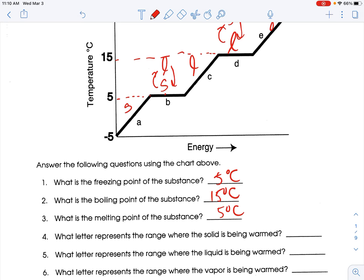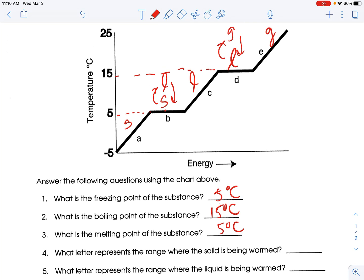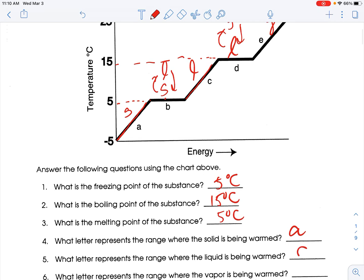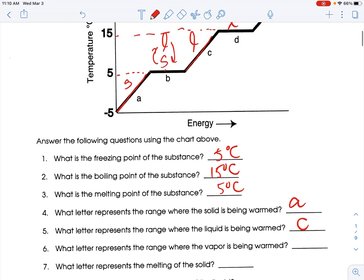What letter represents the range in which a solid is being warmed? Here is our solid. It's getting higher temperature, so it's being warmed. That's part A. What is the range where a liquid is being warmed? Again, it's the temperature increase. It's the middle one, section C. Where is the range where a vapor, which is gas, is being warmed? That's going to be E.